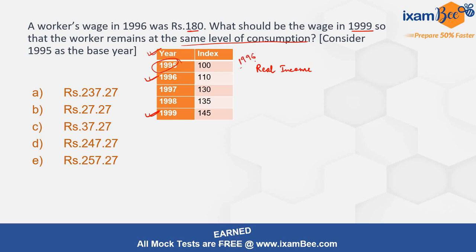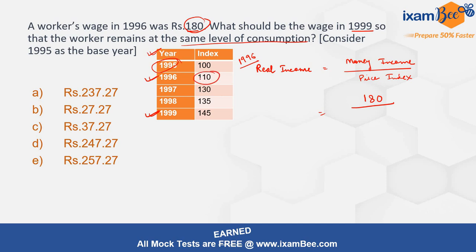If I have to calculate the real income in 1996, it's going to be whatever is his money income in 1996 divided by the price index in 1996. The money income in 1996 is already given to us, which is 180. The price index is 110, which in decimal form is 1.1. So this gives you the real income, which is approximately 163.63.